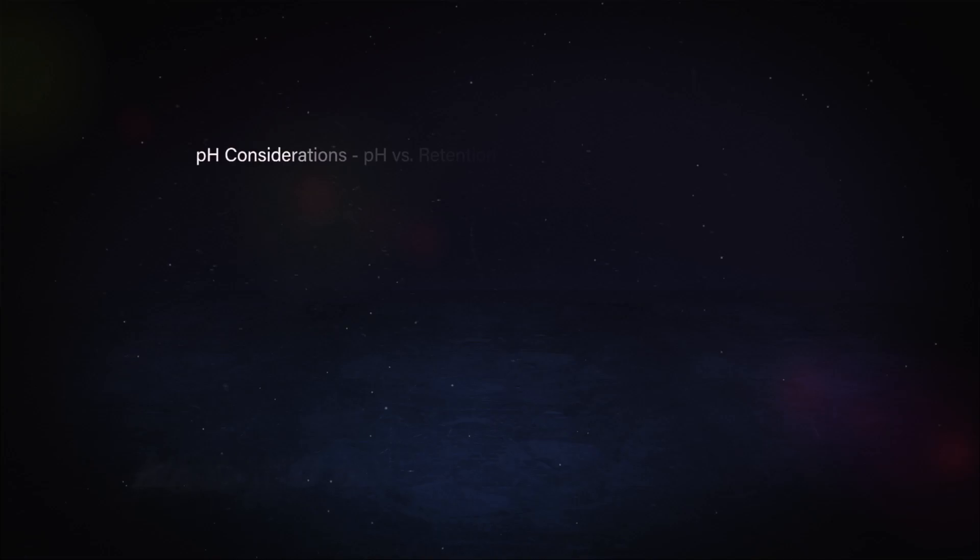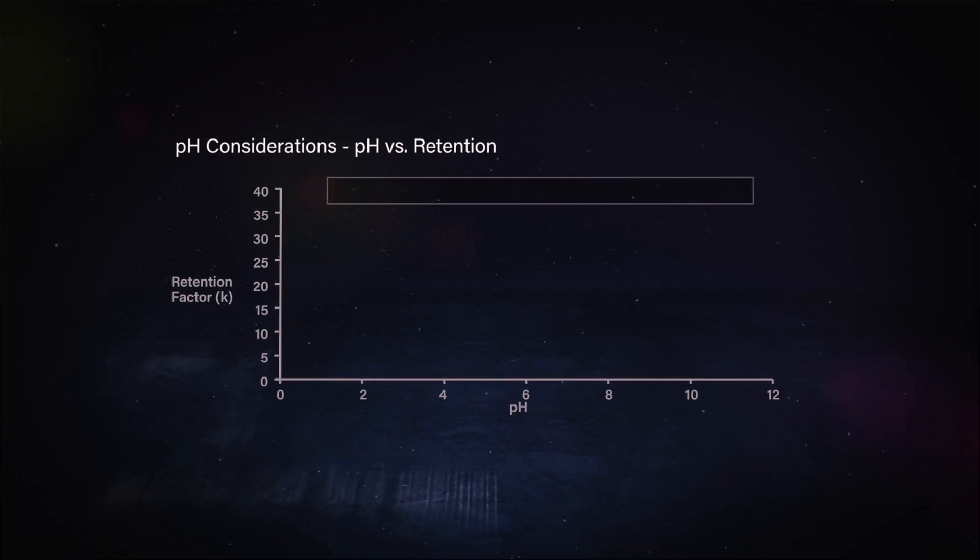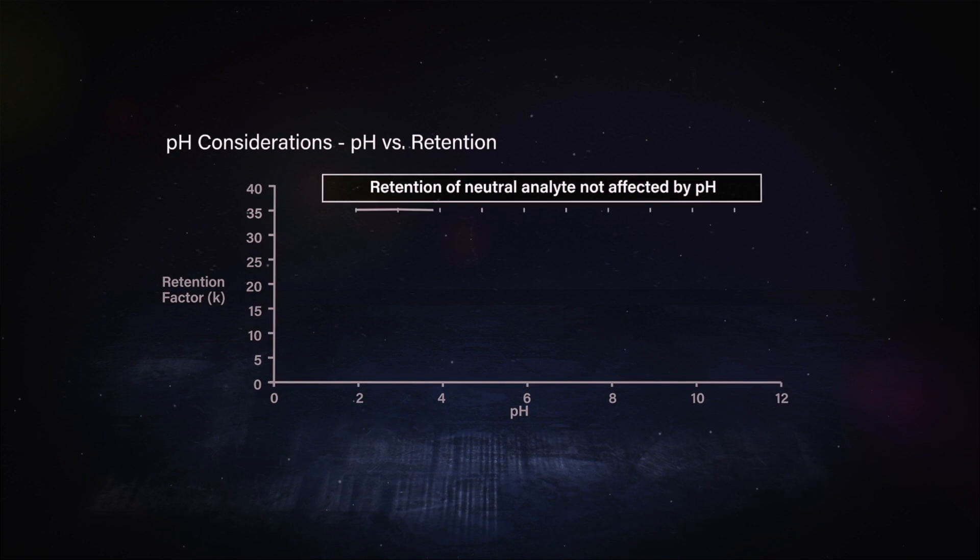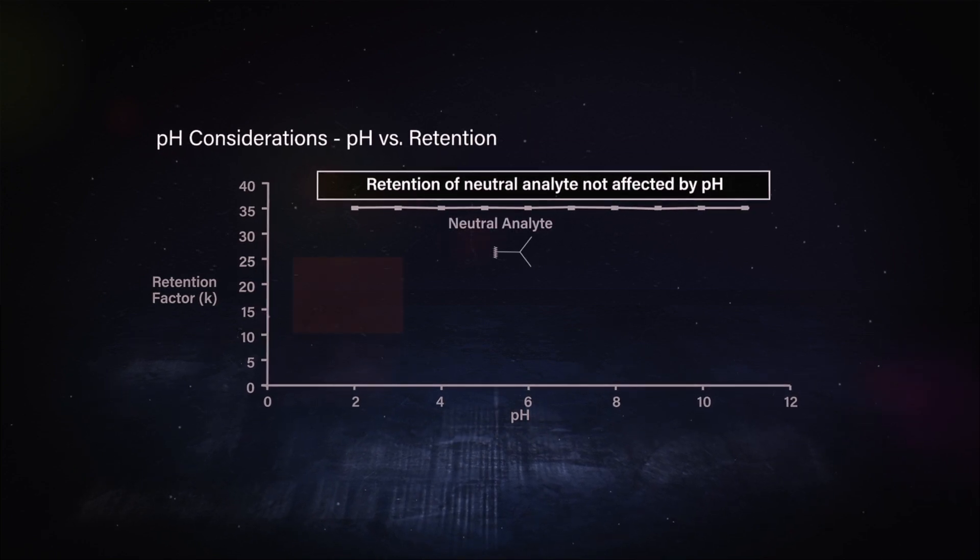Excellent. So Kim, when we think about pH, it's all about manipulating the ionization state between acidic and basic compounds. Here's a classic kind of pH map or retention map.